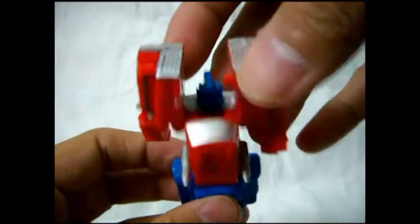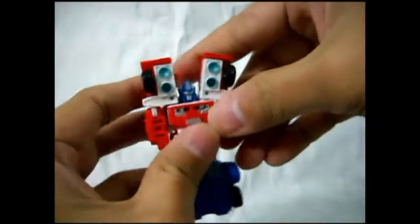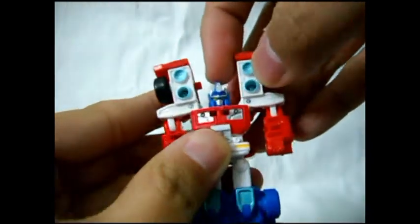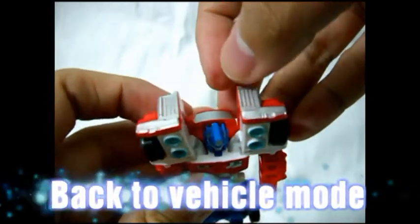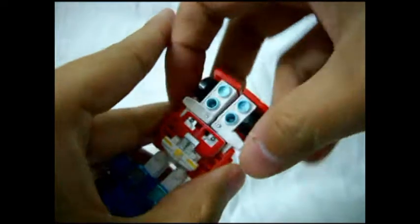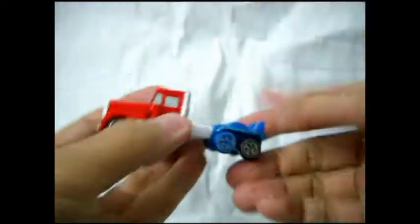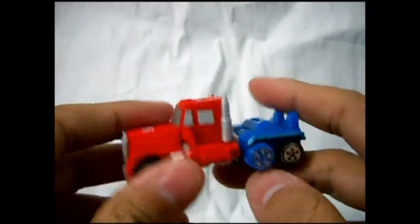This is the side view. To transform him back, put his head in. His head is not rotatable 360 degrees. Put his head in here, put this back, and put back the legs. Push it in.